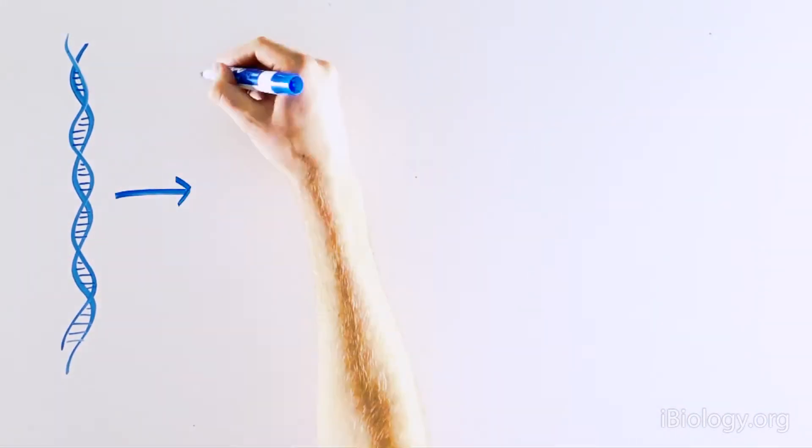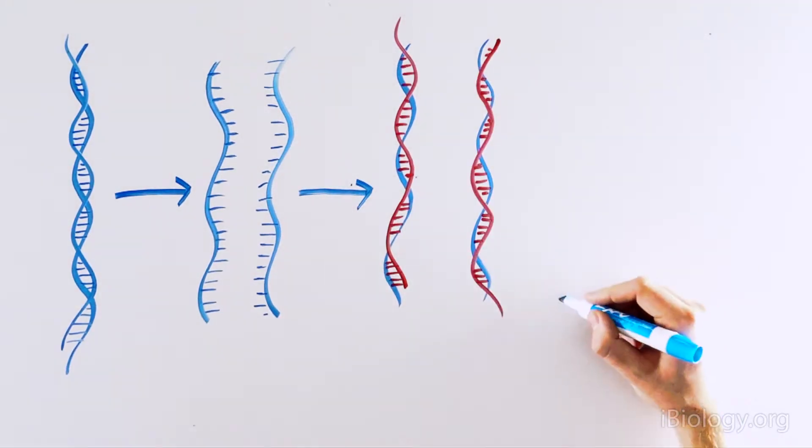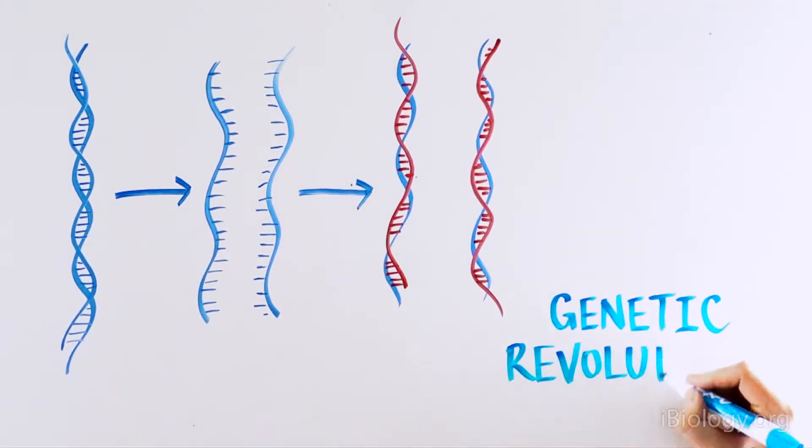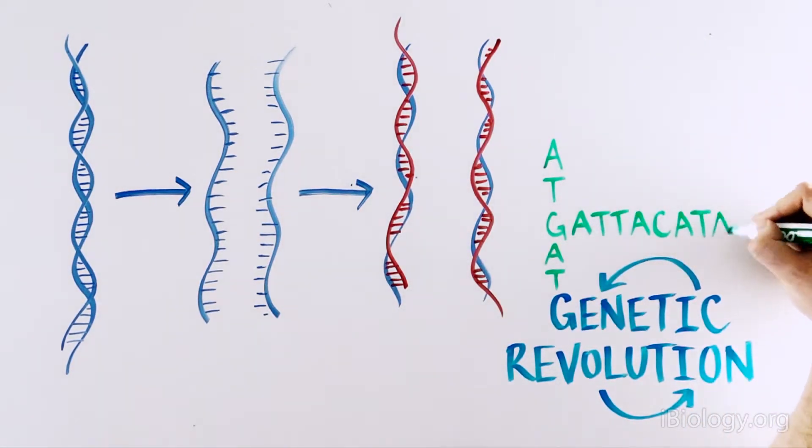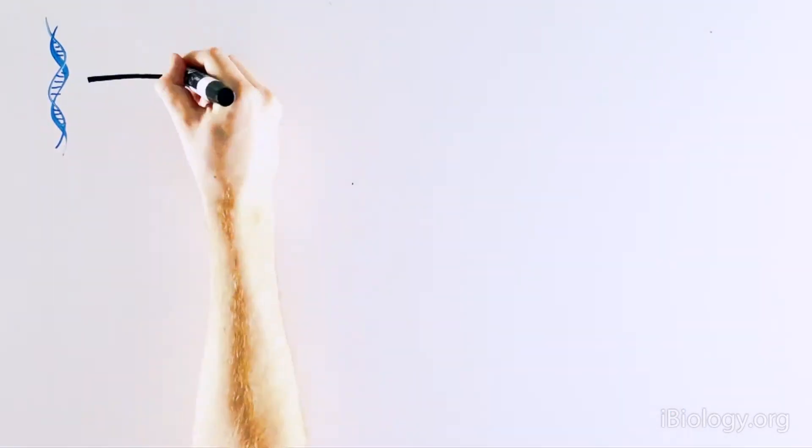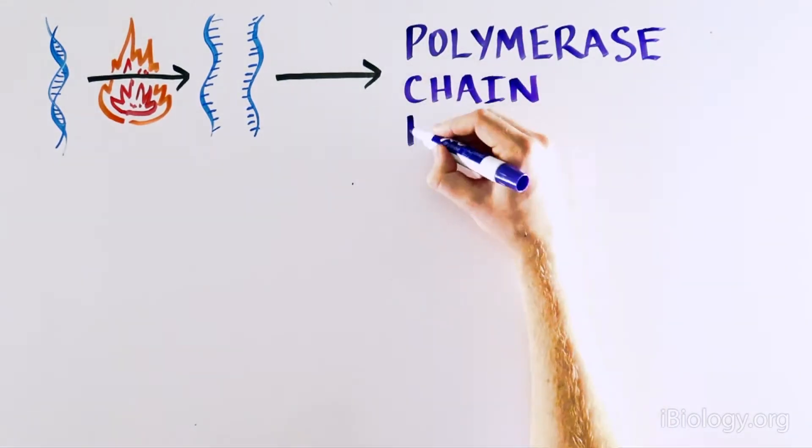By discovering that two strands of DNA can separate and provide the template for the production of two new strands, Meselson and Stahl revolutionized genetics. Scientists were very skeptical that this was even possible, but Meselson and Stahl proved it with a beautifully designed experiment. They also went on to show that heating DNA can cause the DNA strands to separate.